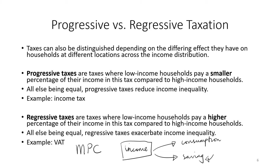All else being equal, regressive taxes exacerbate income inequality. You may wonder why we can't just get rid of regressive taxes and use progressive taxes instead. In an ideal world, that would be the way to go, but there are reasons why we keep VAT. For example, VAT is a simple way of collecting tax on consumption — by having a flat rate charged on goods and services regardless of the individual's income, you reduce the need for complex data gathering and identity checking. Therefore VAT is kept partly because of simplicity. However, there are studies looking into the implementation of a progressive consumption tax.